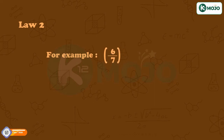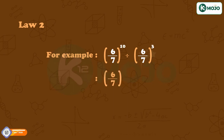For example, 6/7 raised to the power 10 divided by 6/7 raised to the power 3. Here, both have the same base 6/7 and their exponents are 10 and 3, which equals 6/7 raised to the power 10 minus 3, that is 6/7 raised to the power 7.